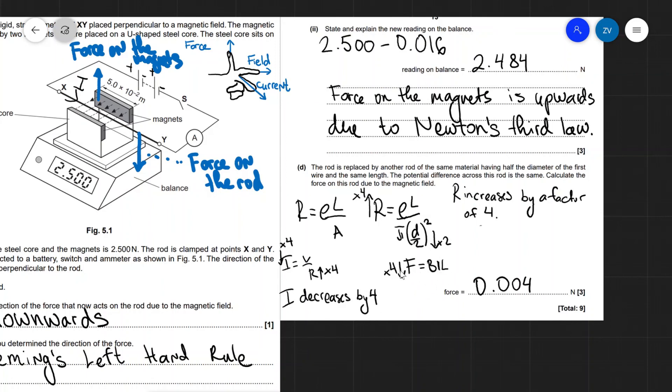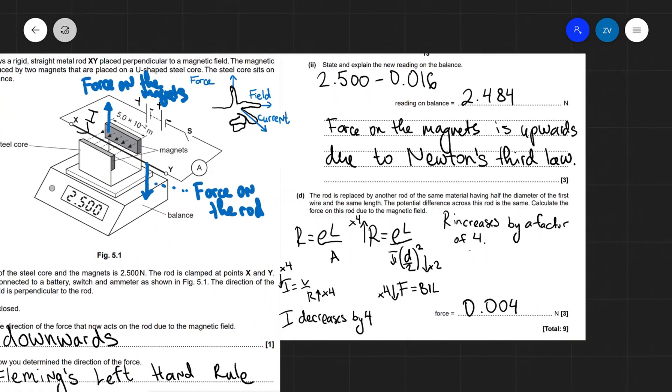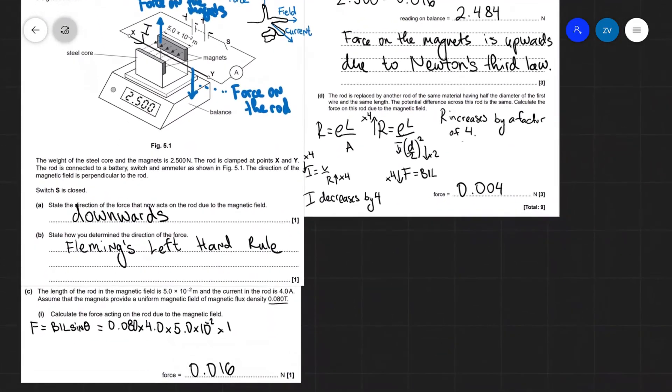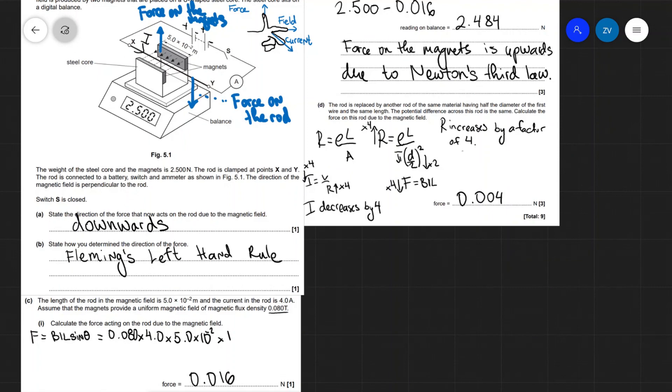So this is really, really important. And because our force was 0.016, our new force will just simply be 0.016 divided by 4, which of course gives us this number: 0.004 newtons.